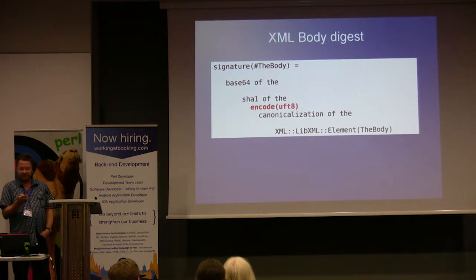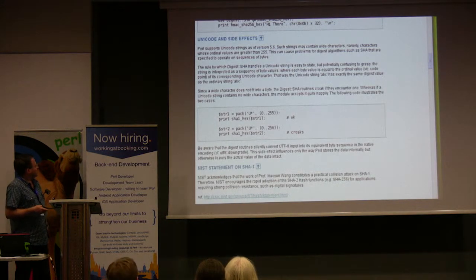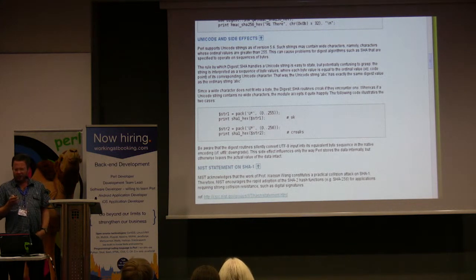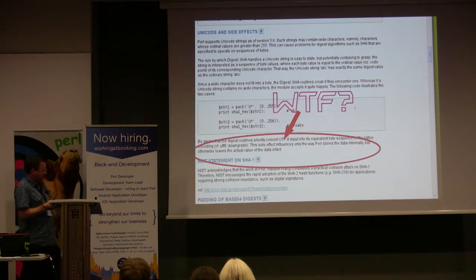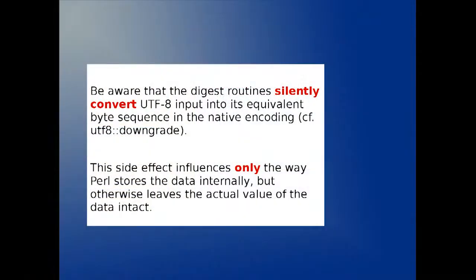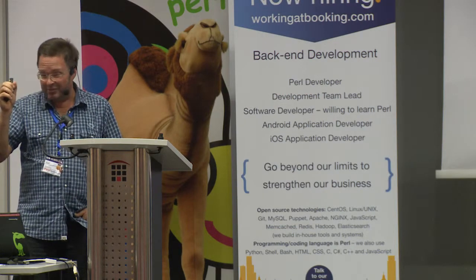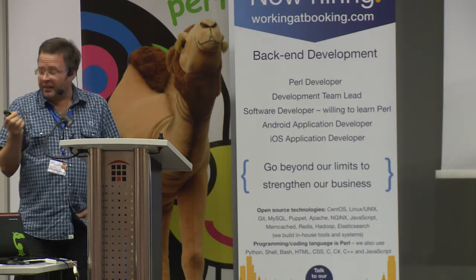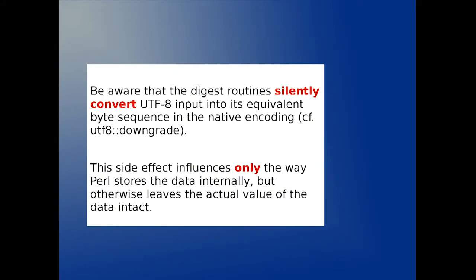But the other thing is — why did it change? The manual page changed as well. The manual page now has a new section on Unicode and side effects of Unicode — but I thought we were talking about data, not character strings. It says: 'Be aware that the digest routine silently converts UTF-8 into its equivalent byte sequence in native encoding using downgrade. The side effects influence only the way Perl stores data internally but otherwise leave the actual value intact.' In checksums, every single bit is very important. If one bit is flipped, the result will be very different and the other side will not accept it. So this is totally wrong.